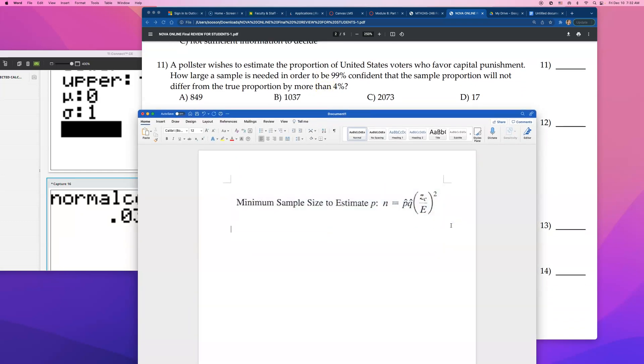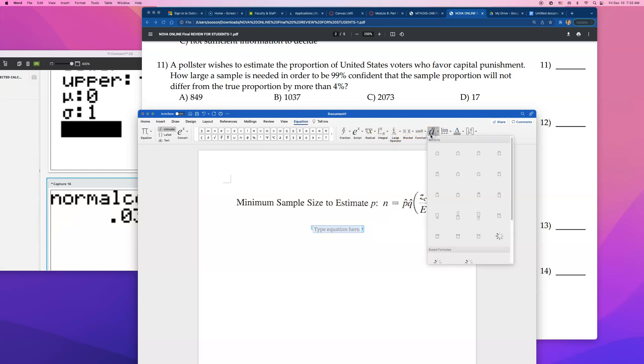So let's see if we have all the information. So P hat is the estimated sample proportion. Sometimes you don't have this information. So if you don't have it, you must just go with 0.5, like 50-50 chance. Like if you don't have a preliminary estimate, then you just go with 0.50.